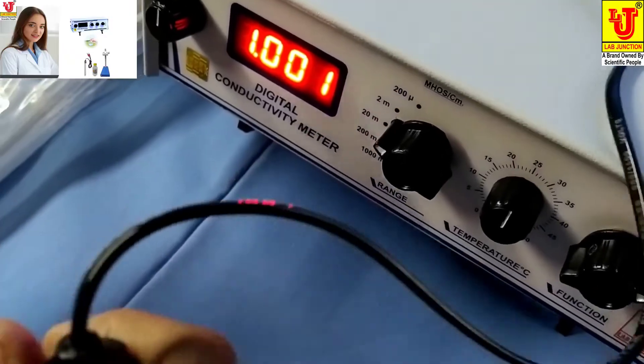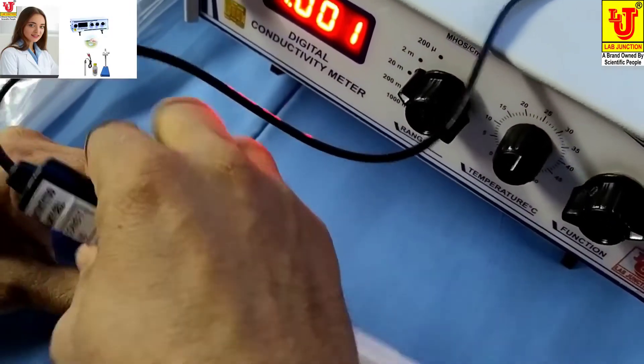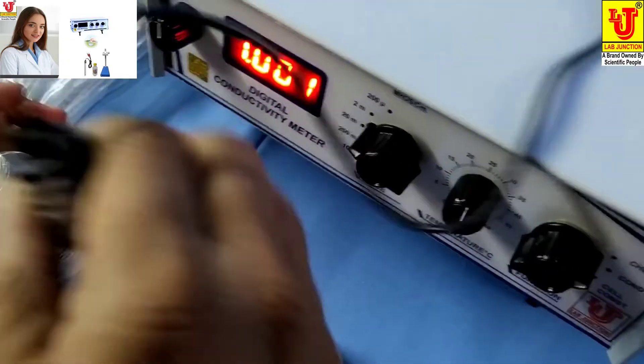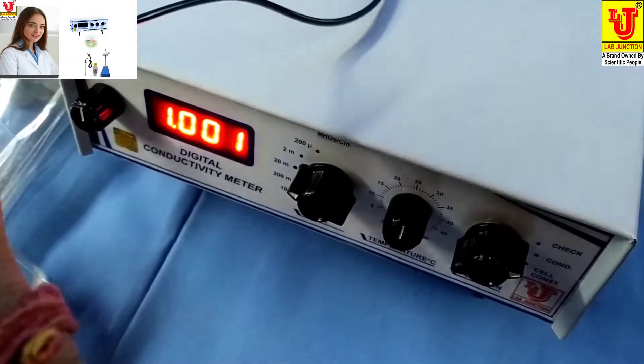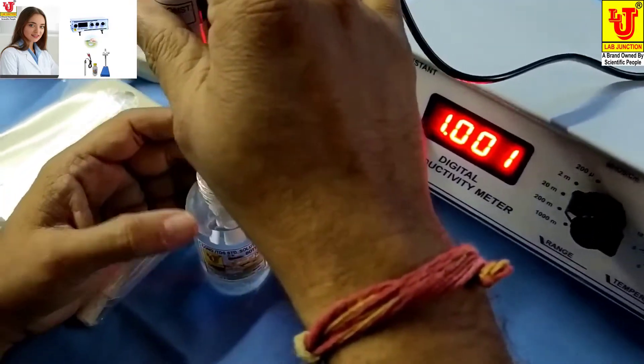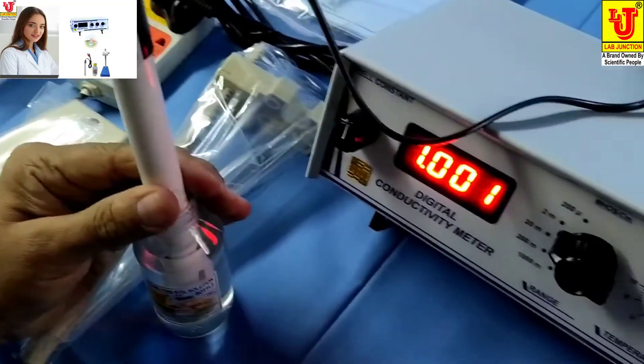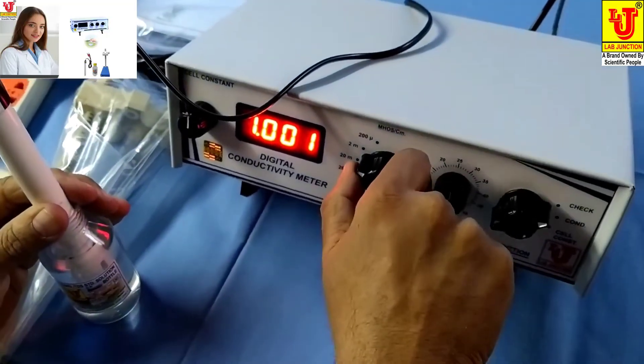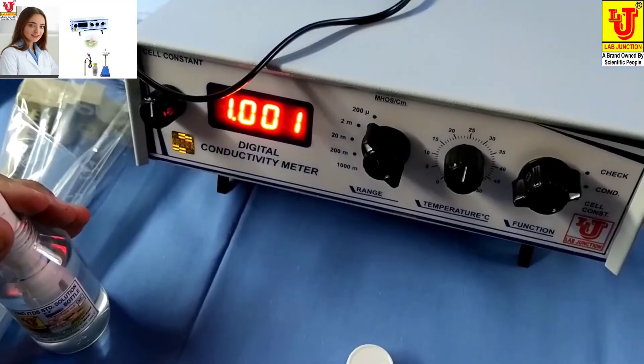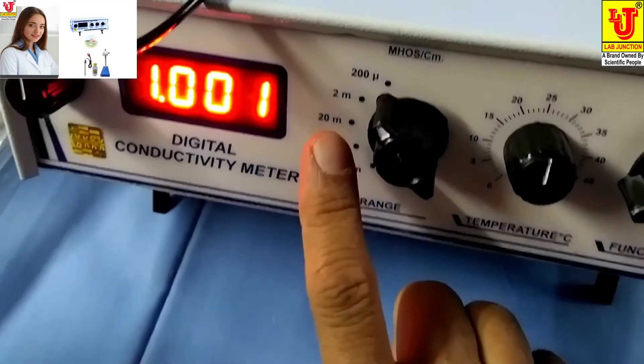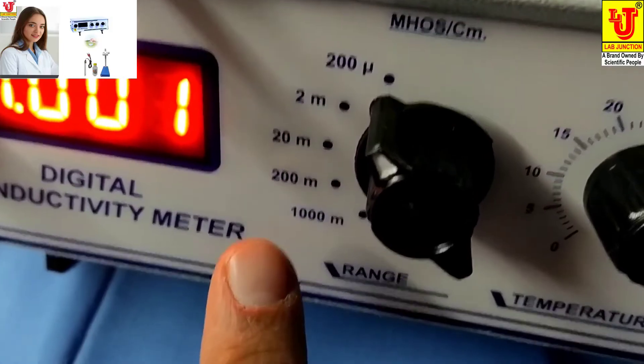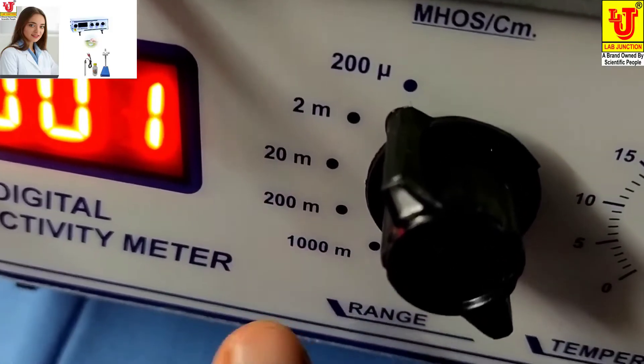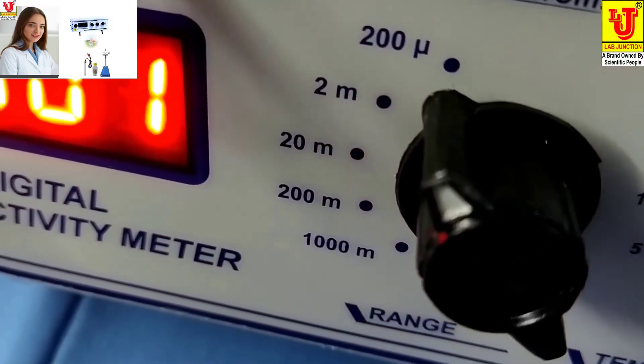This is our conductivity solution. You can dip in that. And you can set first range, 200 microsiemens, second is 2 milli, third is 20 milli, fourth is 200 milli, fifth is 1000 millisiemens.